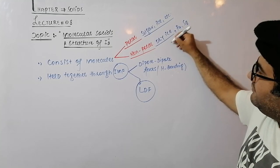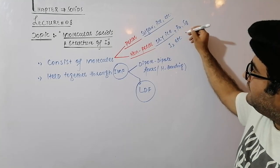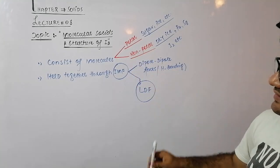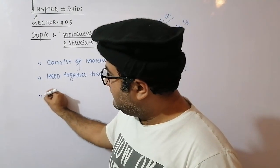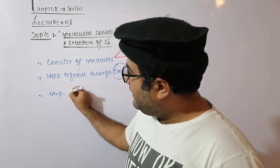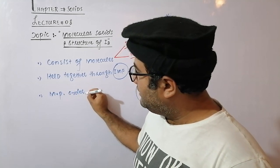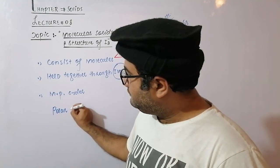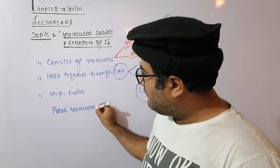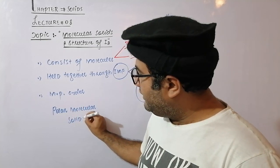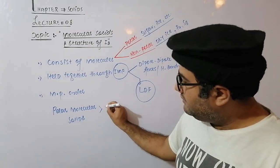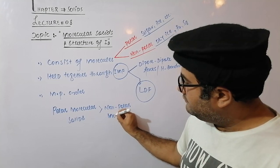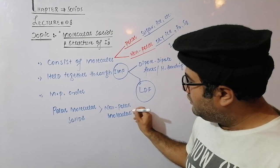Examples of non-polar molecular solids are dry ice (solid CO2), phosphorus, sulfur, iodine, etc. Because the intermolecular forces in polar molecular solids are stronger, polar molecular solids have higher melting and boiling points as compared to non-polar molecular solids.